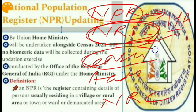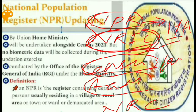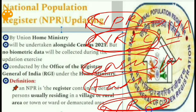Census is different from NPR because it is empowered by the Census Act 1948. Aadhaar is mandated by the Unique Identification Authority of India, whereas NPR is empowered by the Home Ministry. NRC is the National Register for Citizens and is applicable to Assam only; the Assam Accord gives power to the NRC.